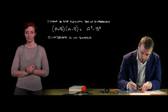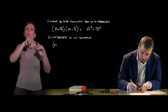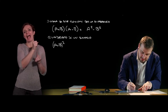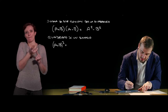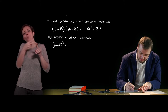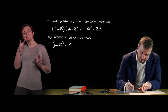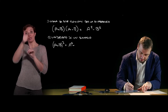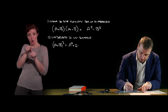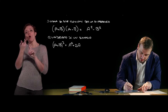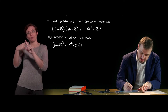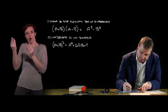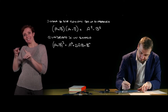Another notable product is the square of a binomial. The square of a binomial, (a + b)², is equal to a trinomial characterized by the square of the first term, plus twice the product of the first monomial and the second monomial, plus the square of the second monomial.